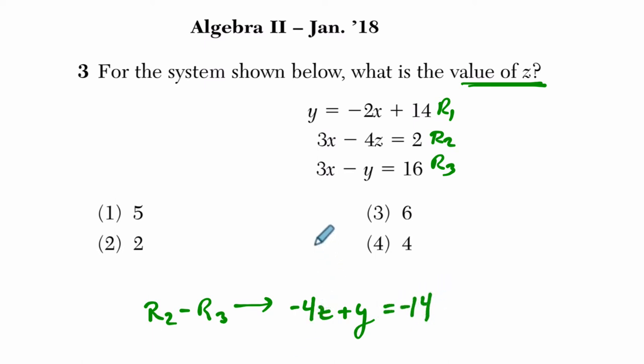Okay, so that gets us pretty close now because we've got rid of x and we've got y and z, and then in the first equation, I'm going to plug in R1 essentially, that y equals negative 2x plus 14, right here. And then I'm like, well, oh no, I'm kind of back where I started before.